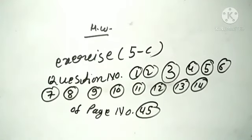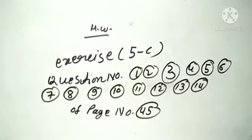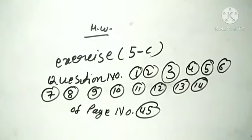Students, this is your homework Exercise 5-C. You have to solve question numbers 1st, 2nd, 3rd, 4th, 5th, 6th, 7th, 8th, 9th, 10th, 11th, 12th, 13th and 14th at page number 45. First and second I have explained, the rest you will solve. If you cannot solve any questions, send them anytime in the group and we will send the solution. Thank you.